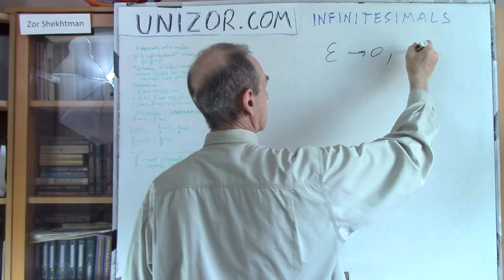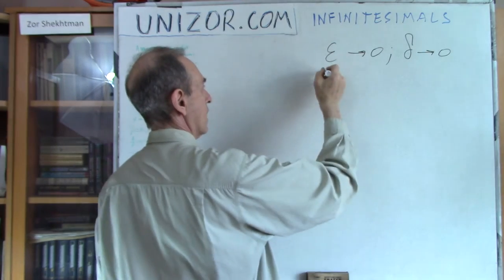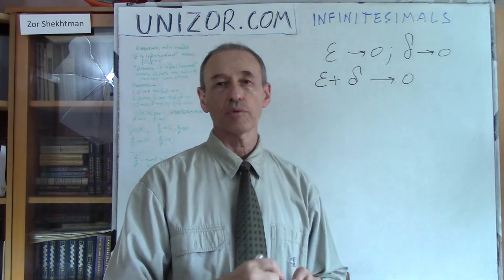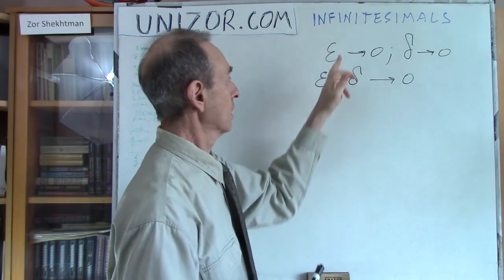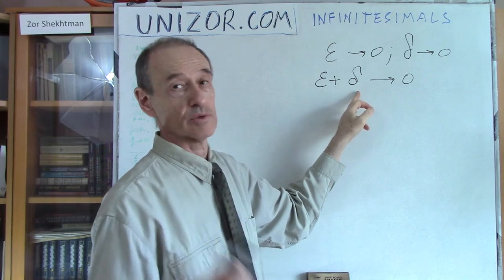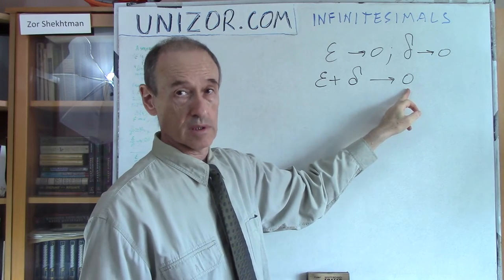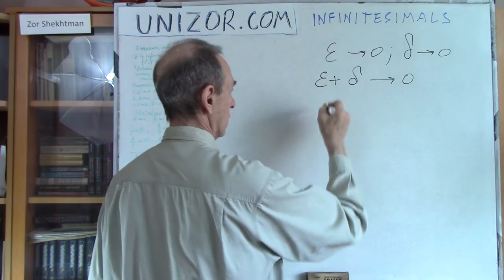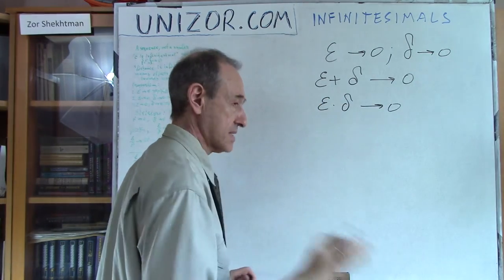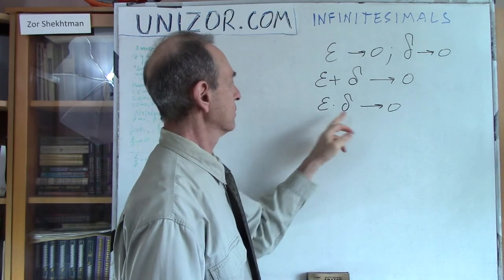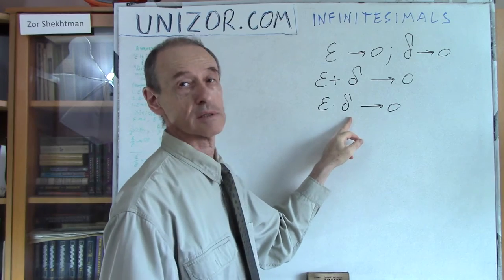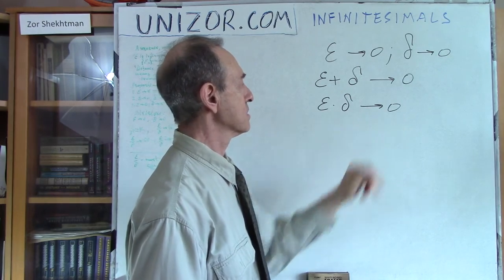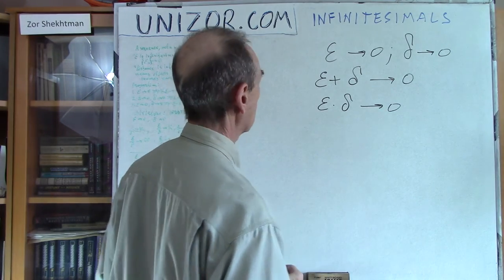If epsilon is infinitesimal and delta is another infinitesimal, then their sum is also infinitesimal. Again, it follows from the properties of limits: if the limit of this is zero and the limit of that is zero, the limit of the sum equals the sum of limits, and zero plus zero is still zero. So a sum of infinitesimals is infinitesimal. Similarly, the product — because of exactly the same logic — the limit of the product is the product of the limits, and zero times zero gives zero. These are kind of obvious properties.